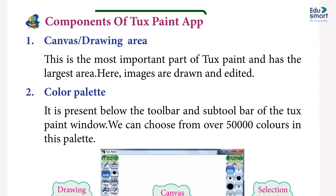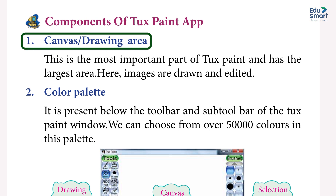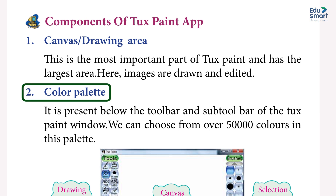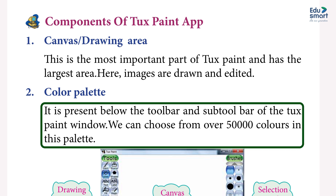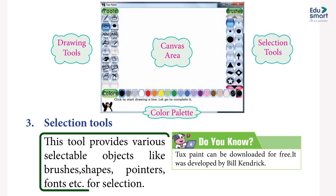Components of the Tux Paint app: 1. Canvas/Drawing area — this is the most important part of Tux Paint and has the largest area; here images are drawn and edited. 2. Color palette — it is presented below the toolbar and sub-toolbar of the Tux Paint window; we can choose from over 50,000 colors in this palette. 3. Selection tools — provides various selectable objects like brushes, shapes, pointer, fonts, etc.